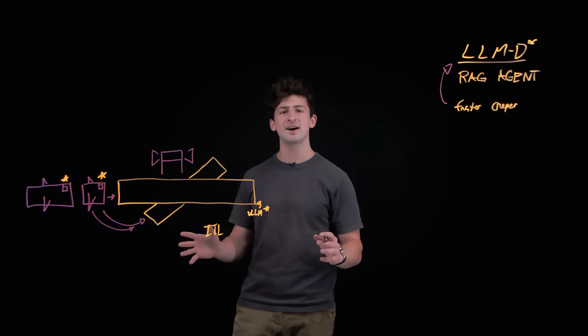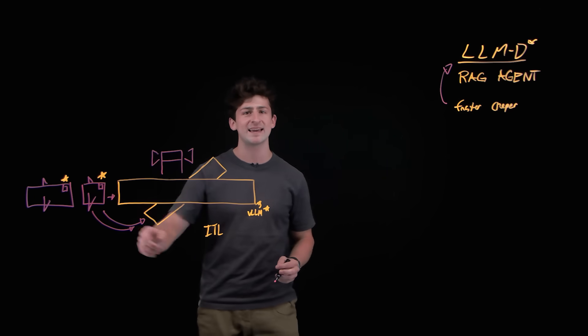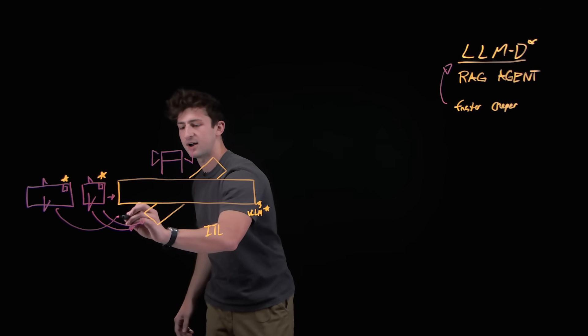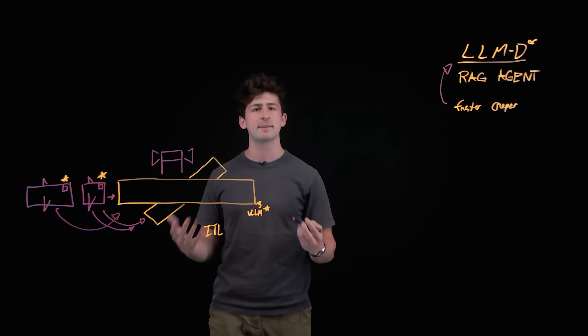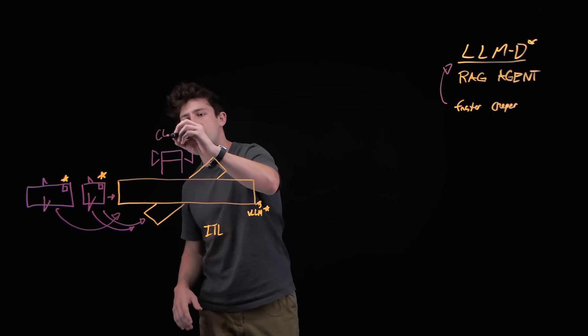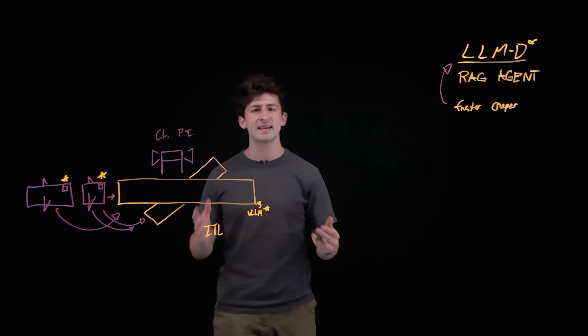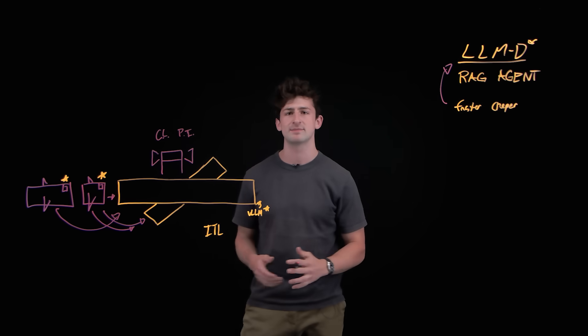So, what LLMD does is uses an inference gateway that can evaluate the incoming prompt request and intelligently route it based on several metrics. So, this includes the current load of the request coming in, the predicted latency of how long the request is going to take, and the likelihood of the data already being cached in the system.